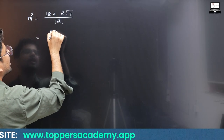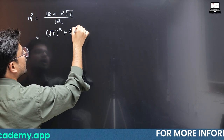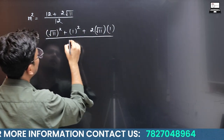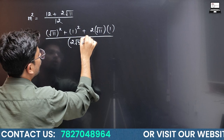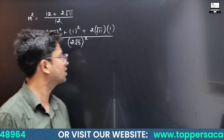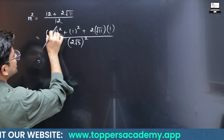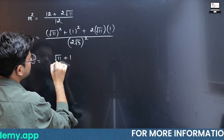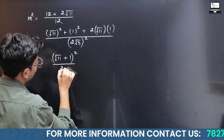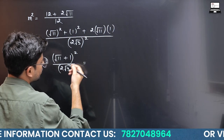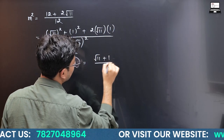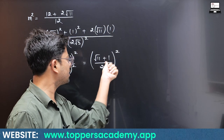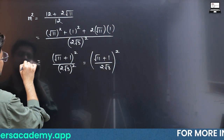Now (12 + 2√11)/12 can be written as (√11)² + 1² + 2·√11·1 all over (2√3)², since (2√3)² = 12. This is the (a + b)² formula, giving m² = (√11 + 1)² / (2√3)².